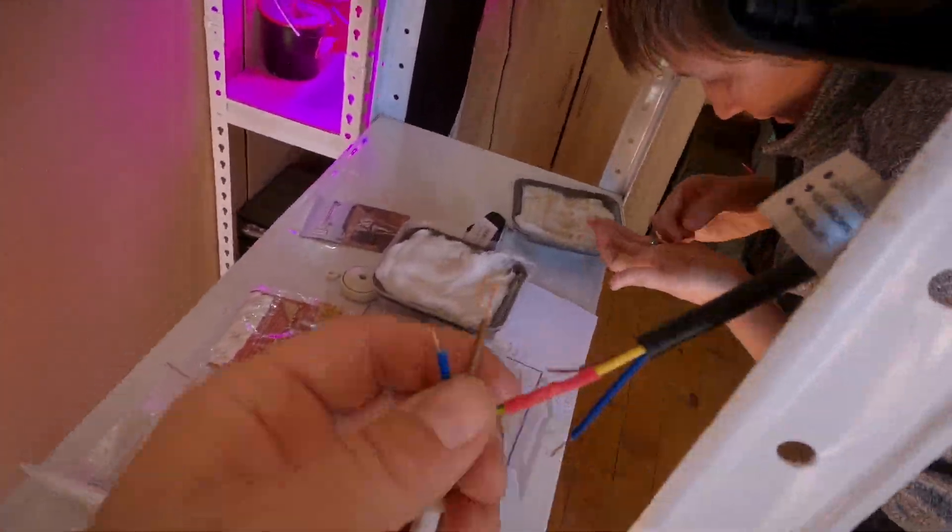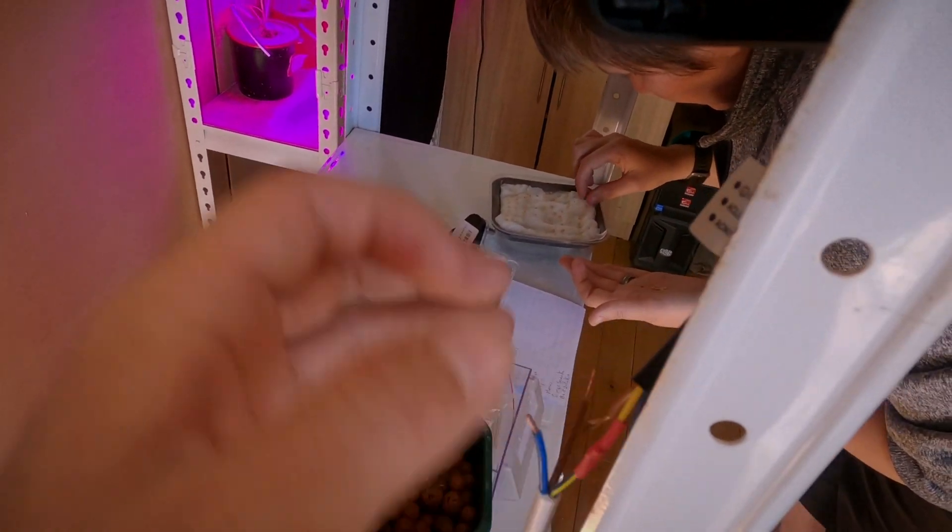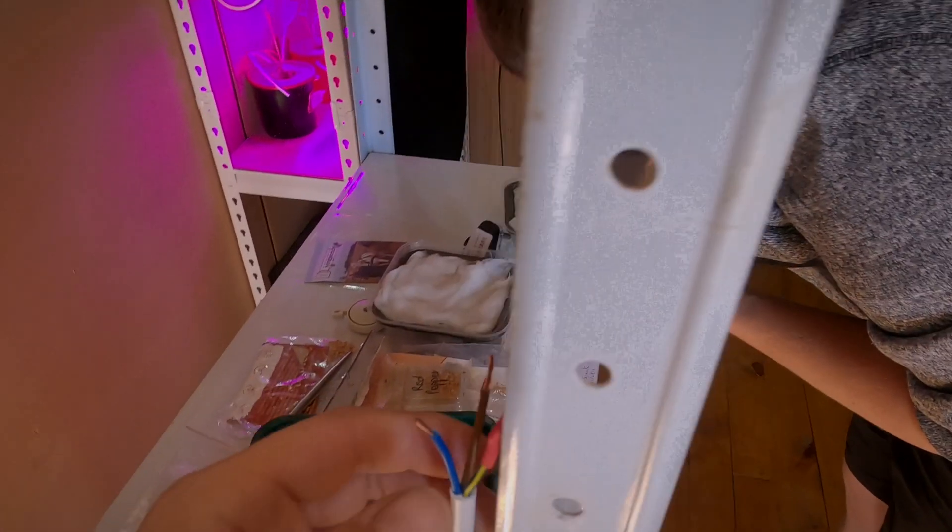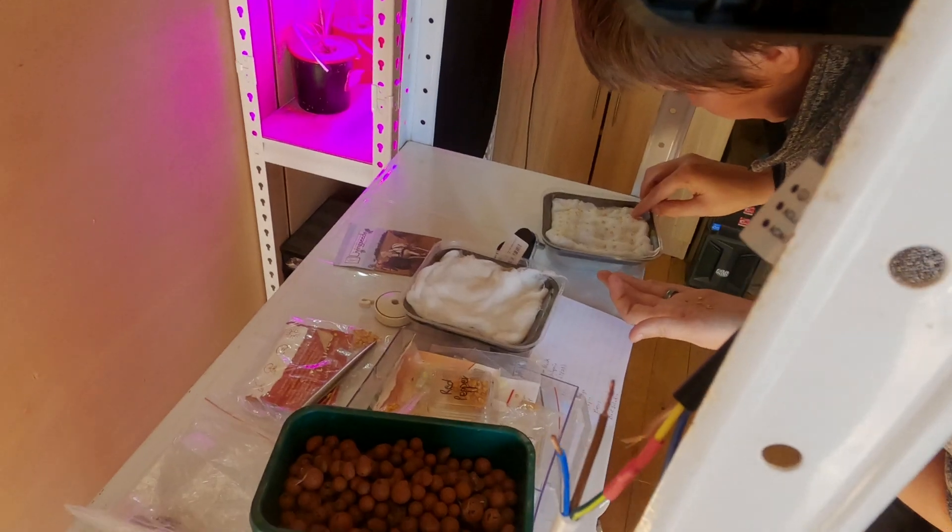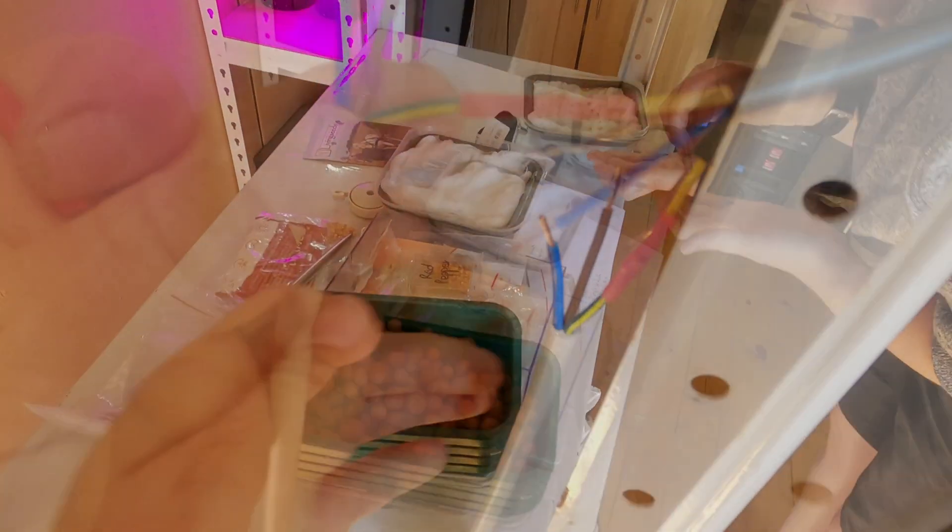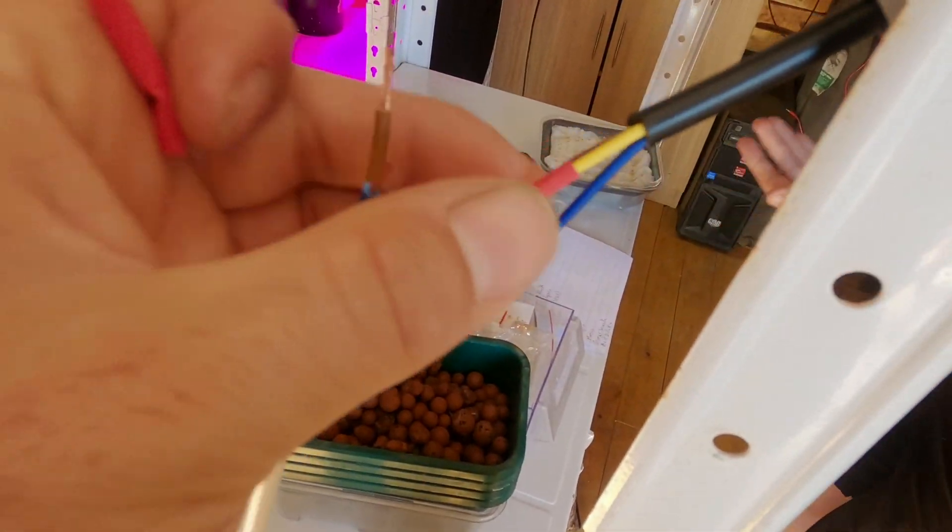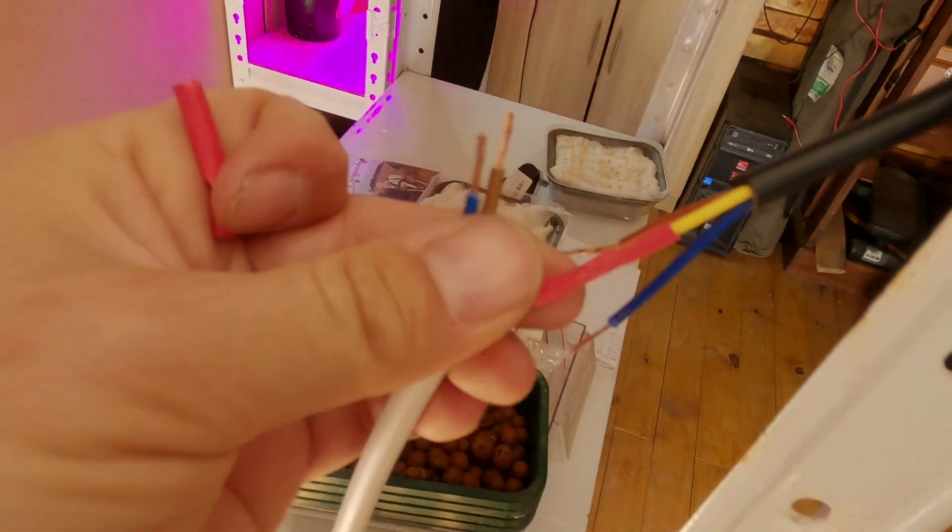Usually these lights don't have earths, but this one does have an earth and I think it's because it's got a metal casing, so don't skip that, just hook it up. I'm going to hook up the earth using heat shrink tubing to just insulate it, and then over that we'll have proper insulation tape.